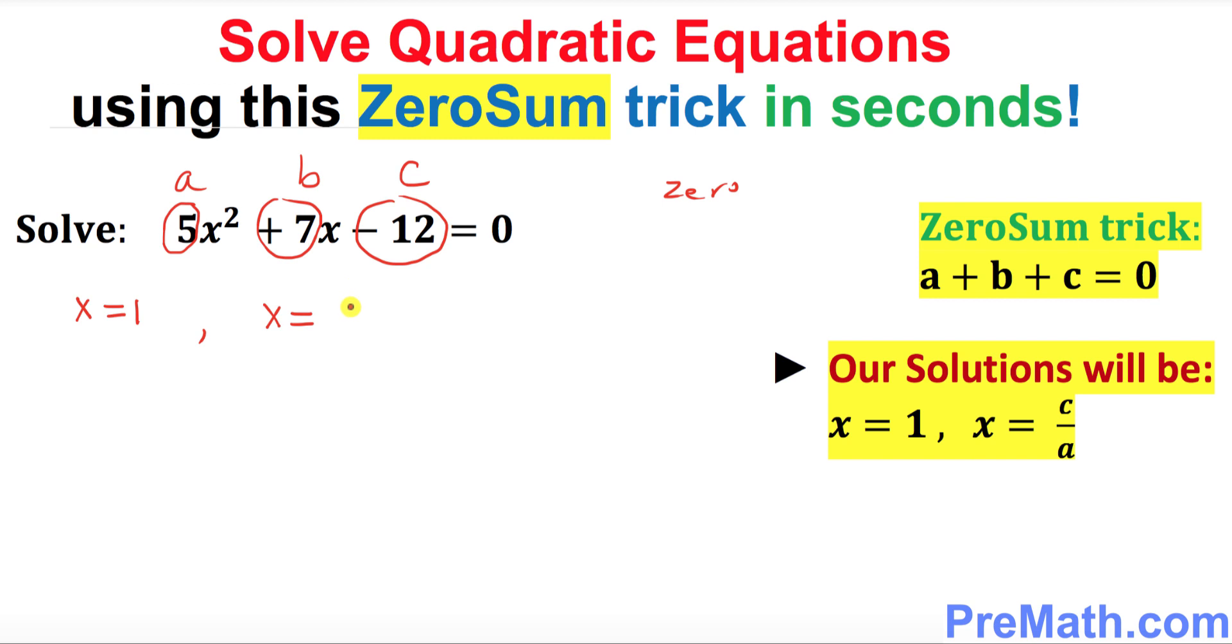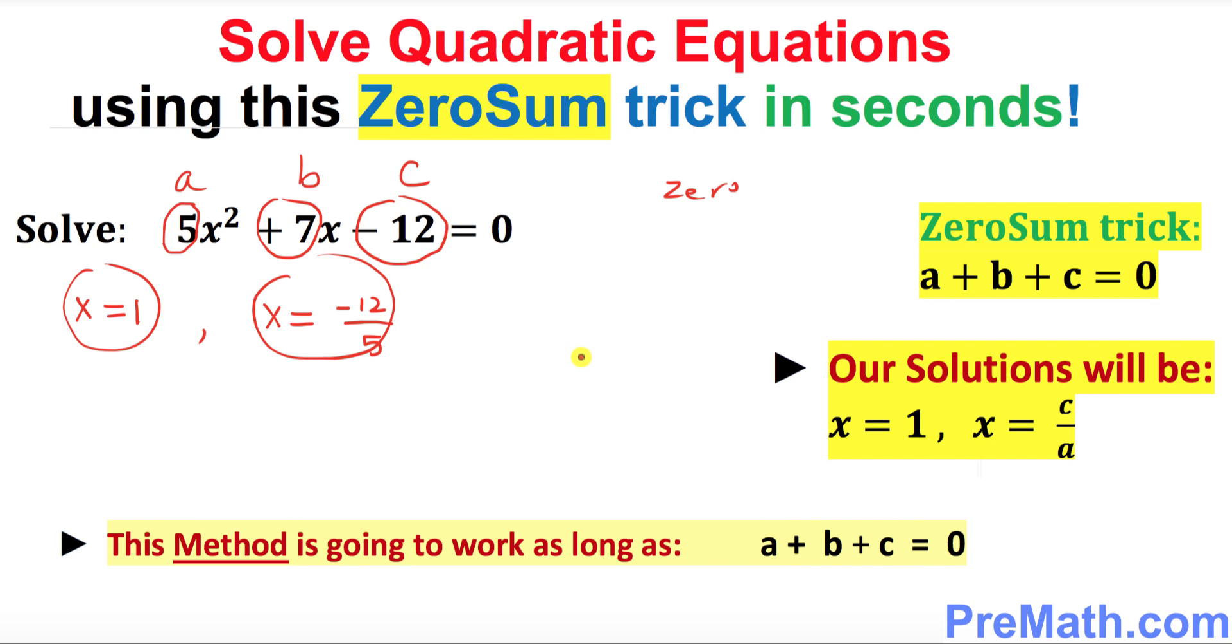In our case c is negative 12 over 5. So that's it. These are our two solutions. And one last thing just keep in your mind that this method is going to work as long as a plus b plus c add up to 0.